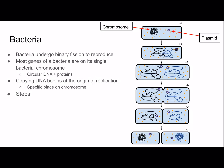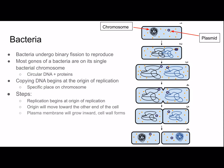Here are the steps of binary fission: replication begins at the origin of replication, the origin moves toward the other end of the cell, the plasma membrane grows inward, the cell wall forms, and two daughter cells result.